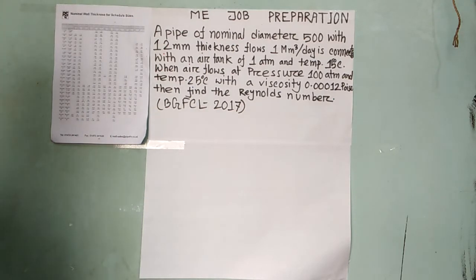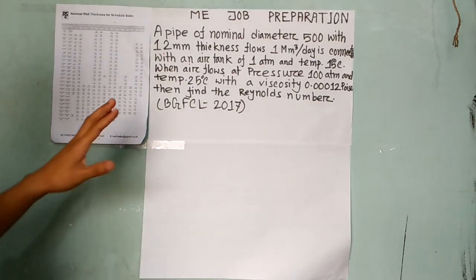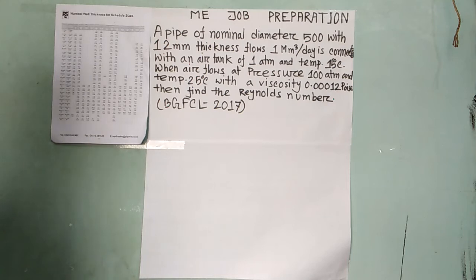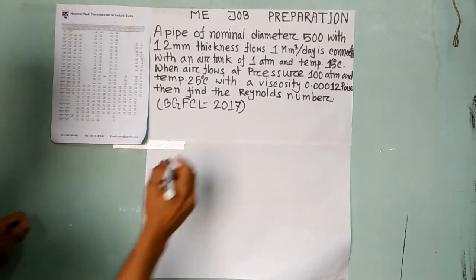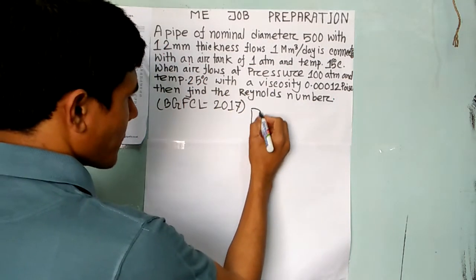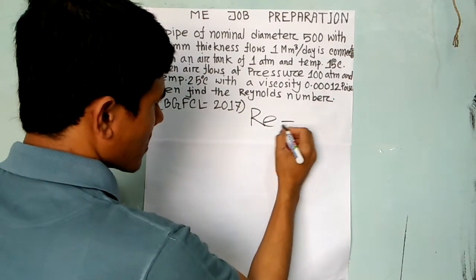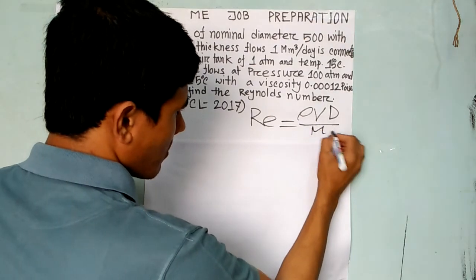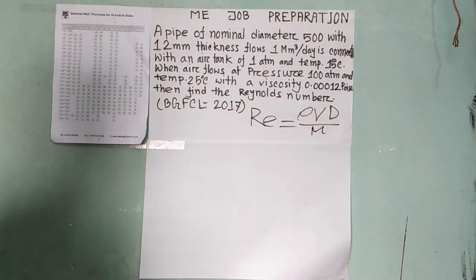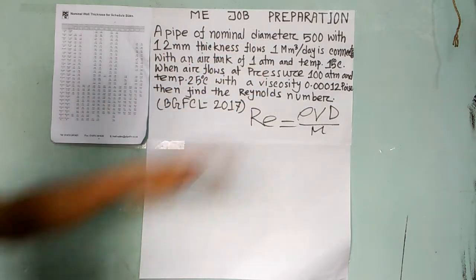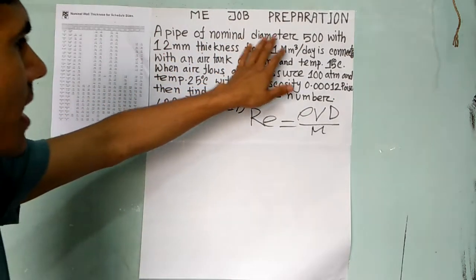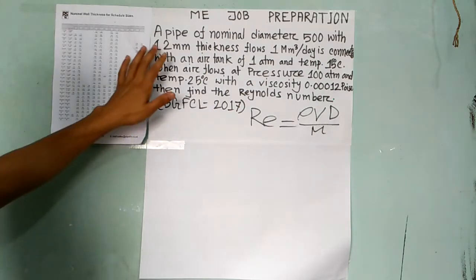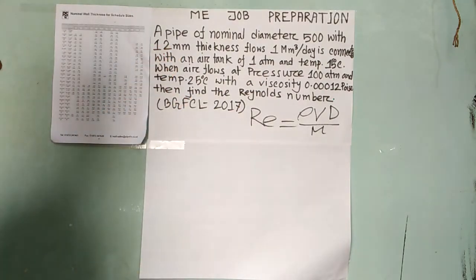Hello students. Today I know the number data. The data was set: a nominal diameter with 12mm thickness.